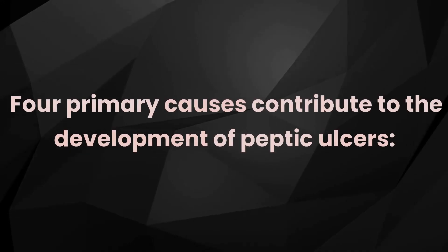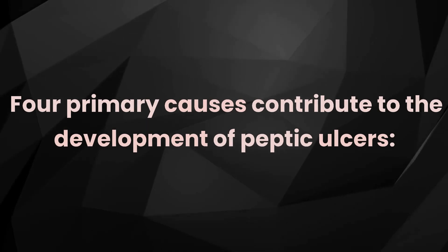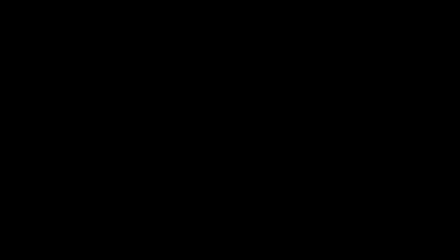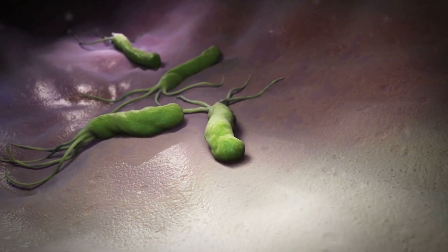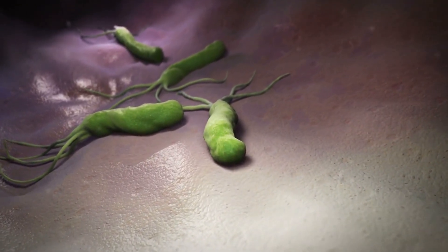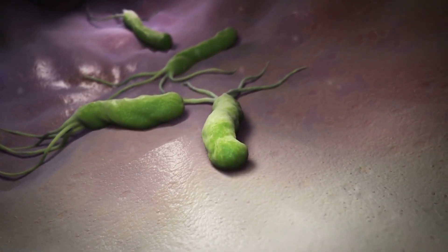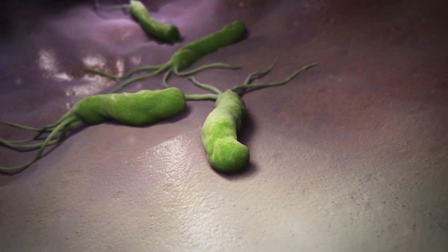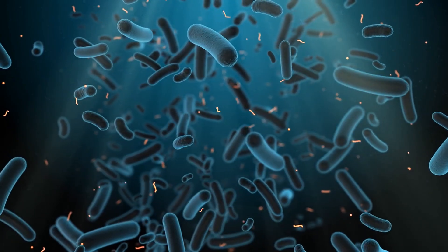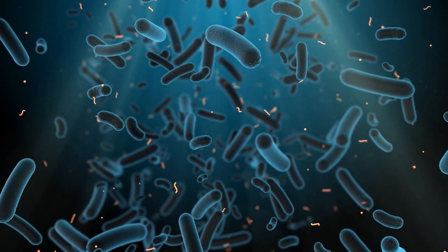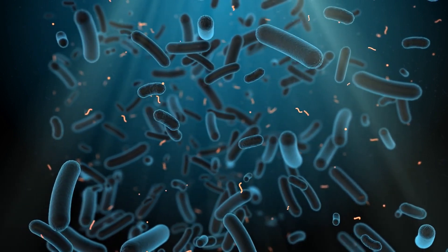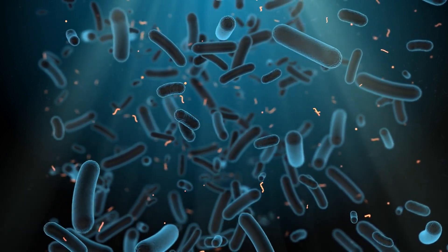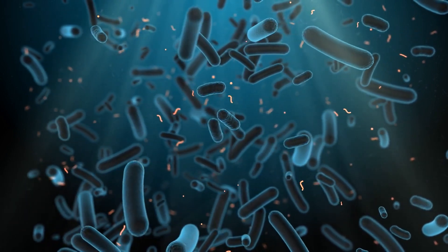Four primary causes contribute to the development of peptic ulcers. The first is Helicobacter pylori, or H. pylori, bacteria. These bacteria live in the mucus layer that protects the stomach lining. When the bacterial balance is disturbed, H. pylori can cause inflammation and weaken the protective layer, leading to ulcer formation.